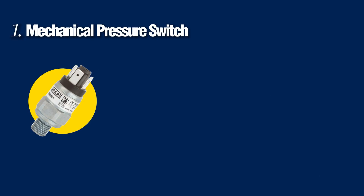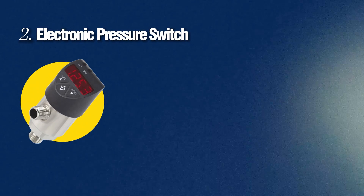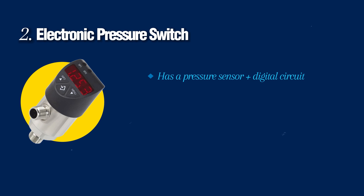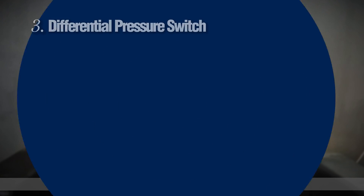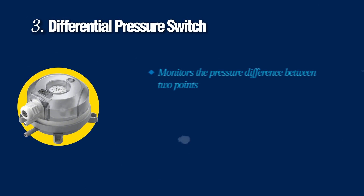Now let's cover the types of pressure switches. The first is the mechanical pressure switch — it uses a spring and diaphragm or piston, requires no power supply, and is widely used for simple on-off control. The second is the electronic pressure switch, which has a pressure sensor plus digital circuit, offering precise set points, delay timers, and digital display. It is widely used in modern smart automation systems.